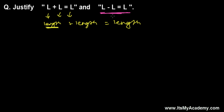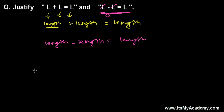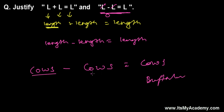In mathematics, L - L equals zero. But we are learning physics, so when you subtract one length from another length, you are supposed to get a length again. It's like having some cows and subtracting a few cows — you'll get cows, not buffalo. Even if some cows died, the ones left are still cows, not buffalo.